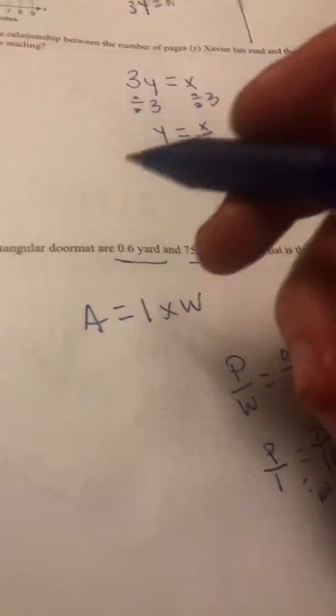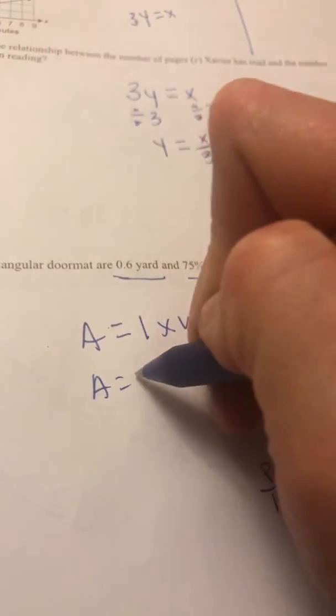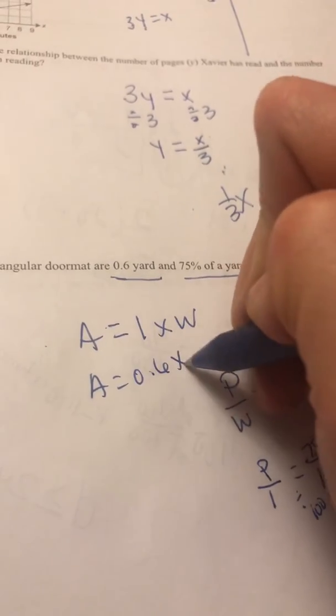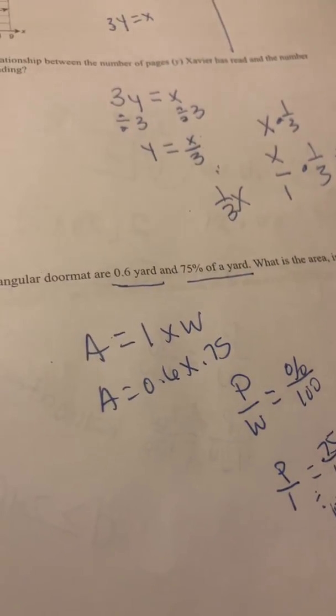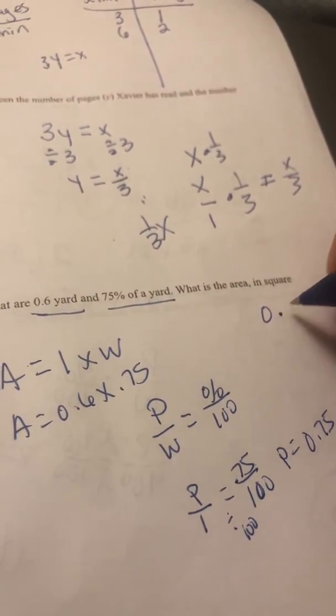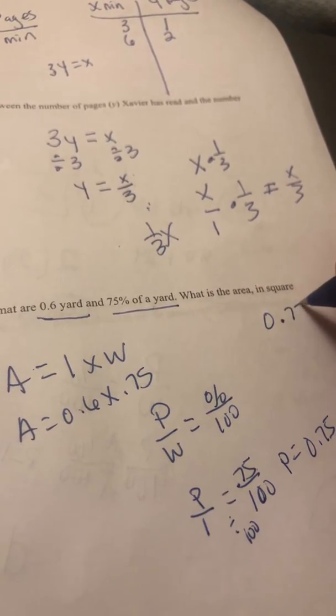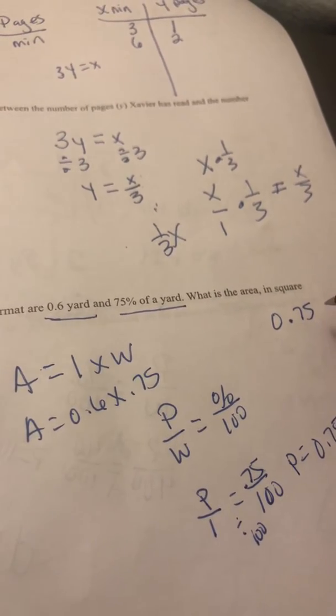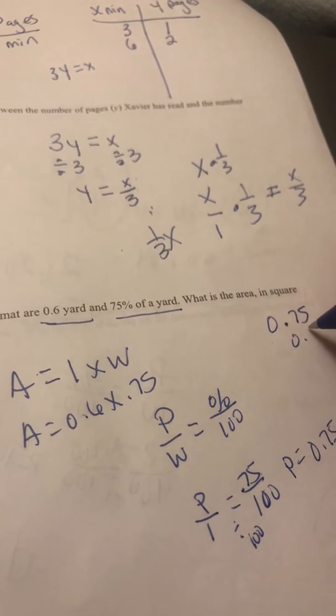So now I know that I'm going to be using area is equal to 0.6 times 0.75. I would just plug that into my calculator, but I'm using my phone and I don't have a calculator with me. So it looks like I'm going to go ahead and do that by hand.